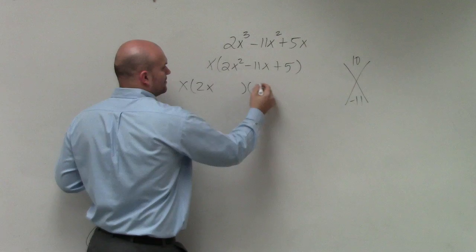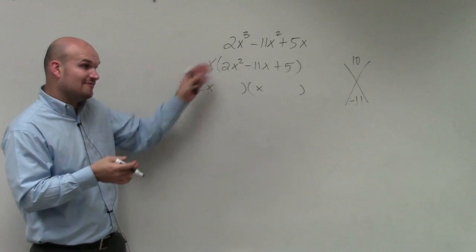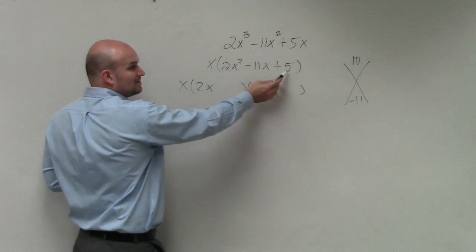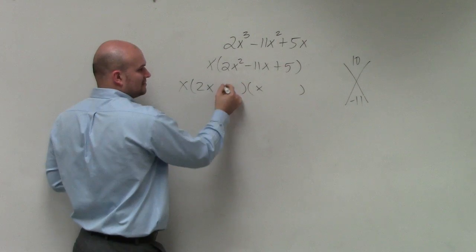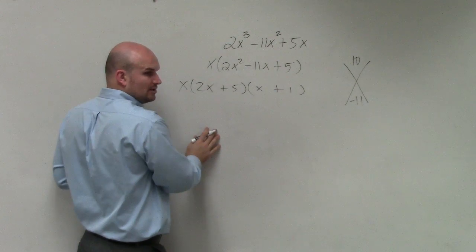2x times x is going to give you 2x squared, correct? If you were to apply FOIL, then you need to figure out what two numbers are going to multiply to give me 5: positive 5 and positive 1. That works, right?